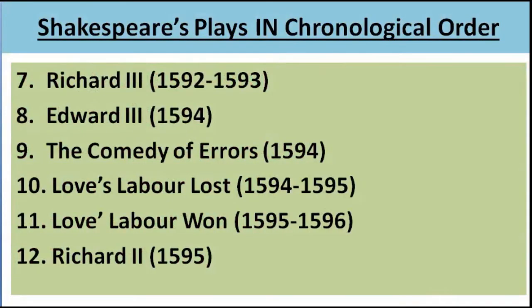After Titus Andronicus, the seventh play was Richard III, 1592 to 1593. Eighth, Edward III, 1594. Ninth, The Comedy of Errors, 1594. Tenth, Love's Labour's Lost, 1594 to 1595. Eleventh, Love's Labour's Won, time span 1595 to 1596. This play is also very important — though it is not very well recognized, people get confused. They think that Love's Labour's Lost is the only play written by Shakespeare, but Love's Labour's Won is another name — it is also a play written by William Shakespeare.